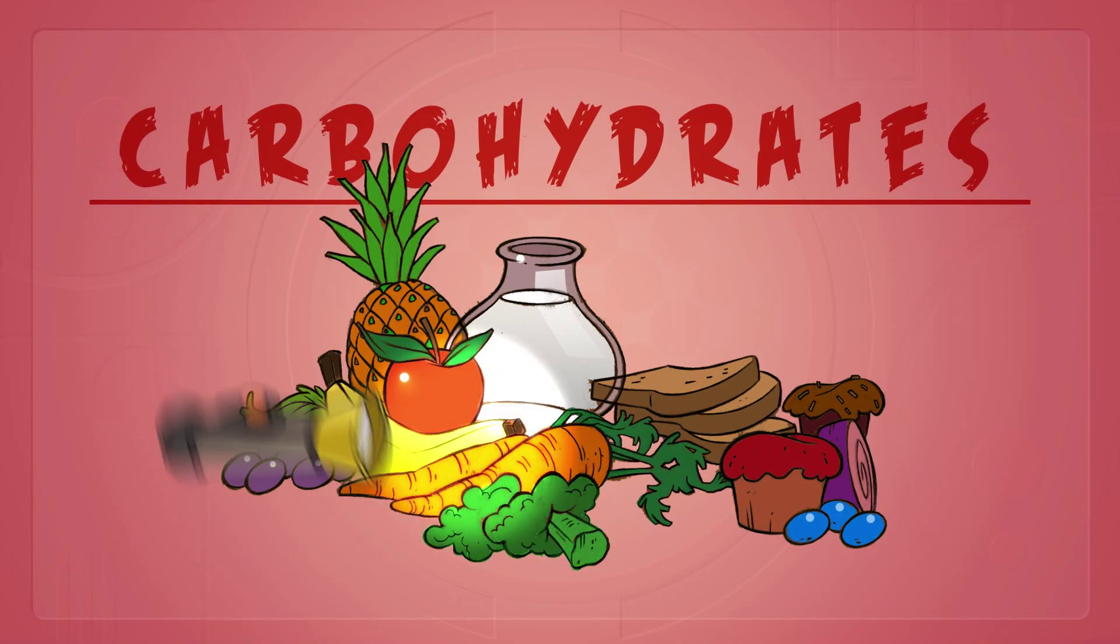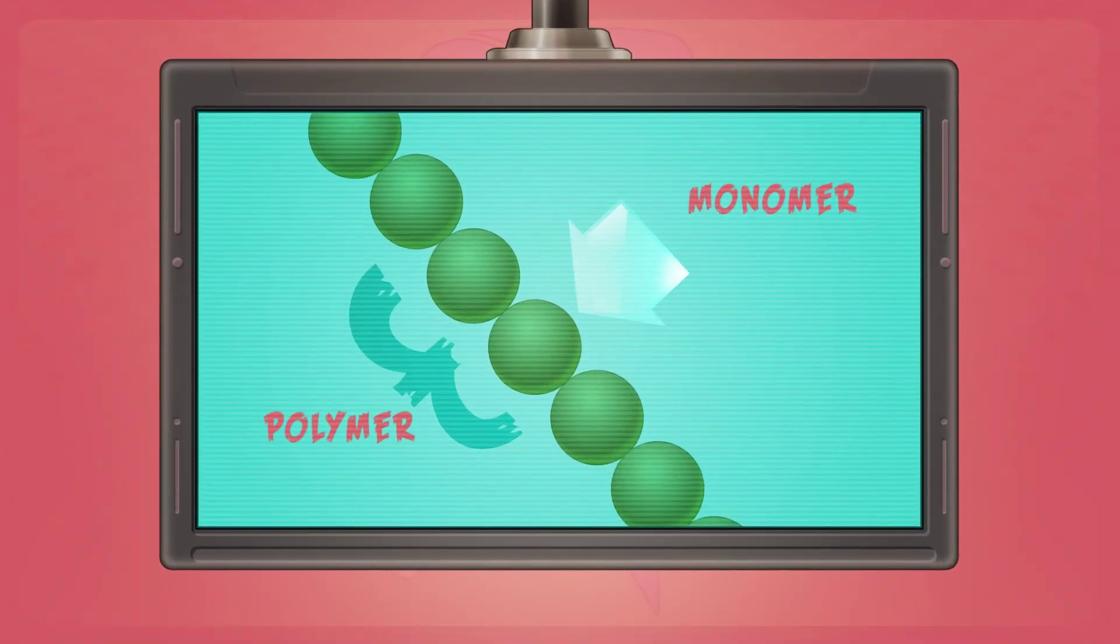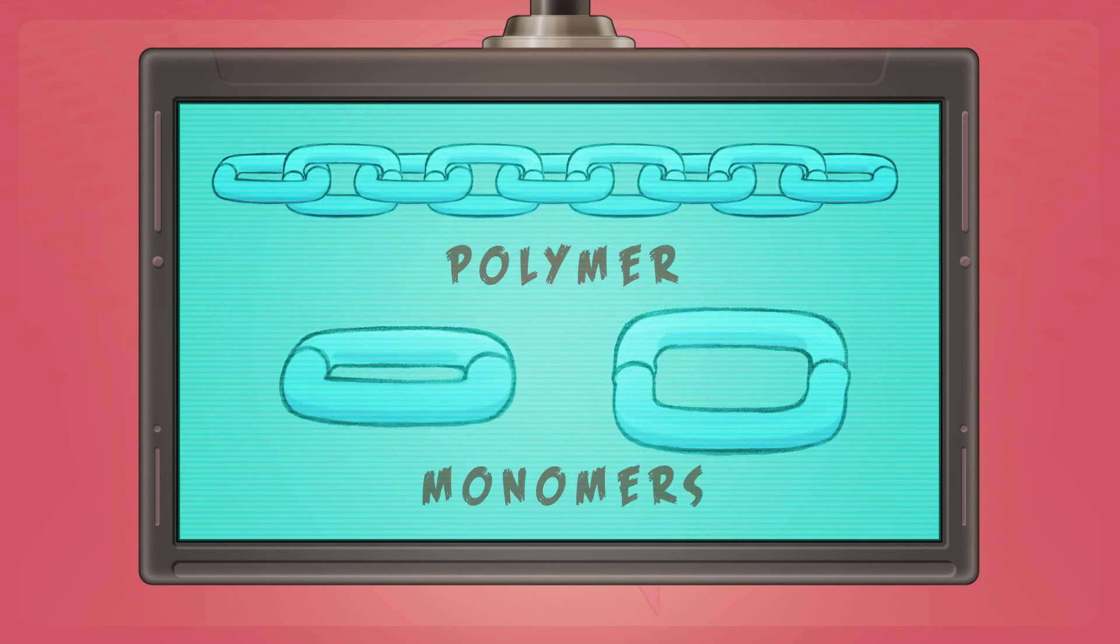Carbohydrates are found in vegetables, fruits, dairy products, bread, and candy. They're polymers, or molecules built from repeating units called monomers. You can think of a polymer as a chain and monomers as the individual links.